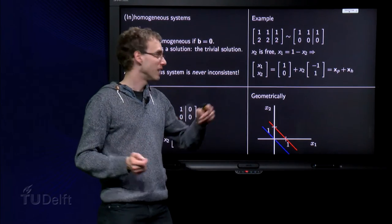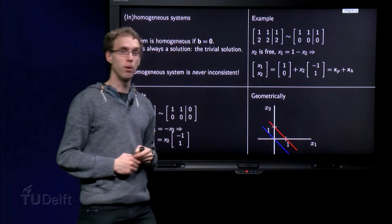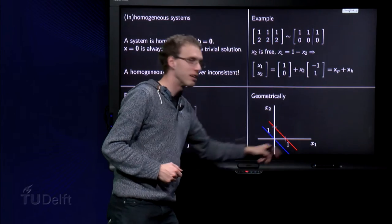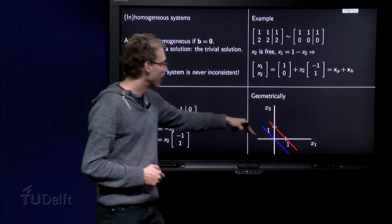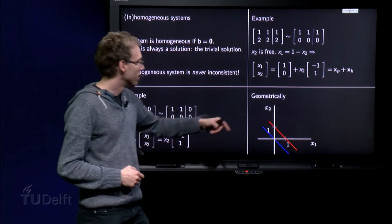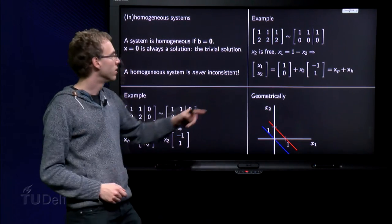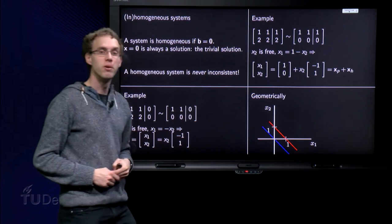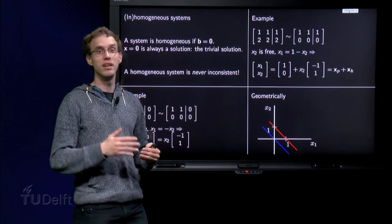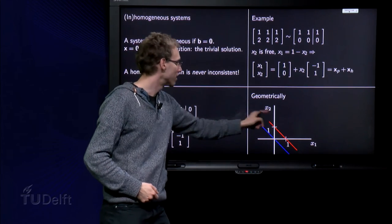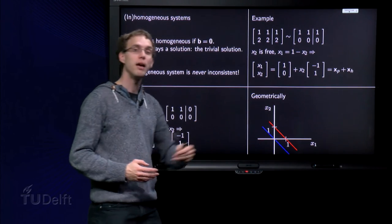The points satisfying the inhomogeneous problem are on the red line. And then you see straight away the similarity between the two lines. The red line is just a blue line but then shifted along the vector 1, 0. So that's geometrically the relation between the inhomogeneous problem in red and the homogeneous problem in blue.